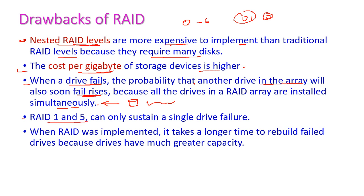RAID levels 1 to 5 can only sustain a single drive failure. If more discs fail, data retrieval becomes very complicated, or it is almost not possible to retrieve the data. Additionally, when a RAID is rebuilt, it takes longer time because the drives have much greater capacity.